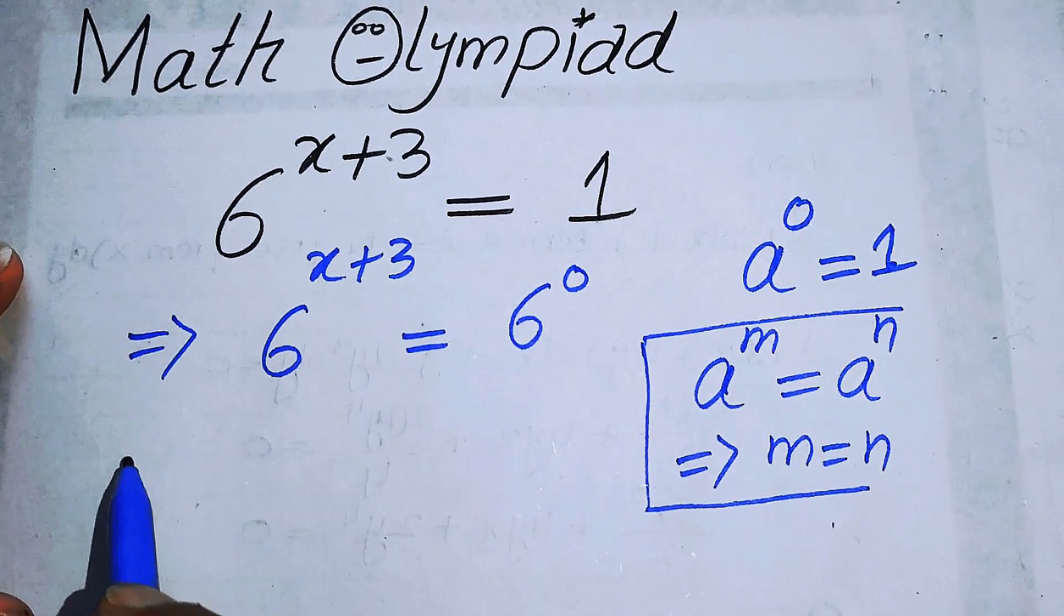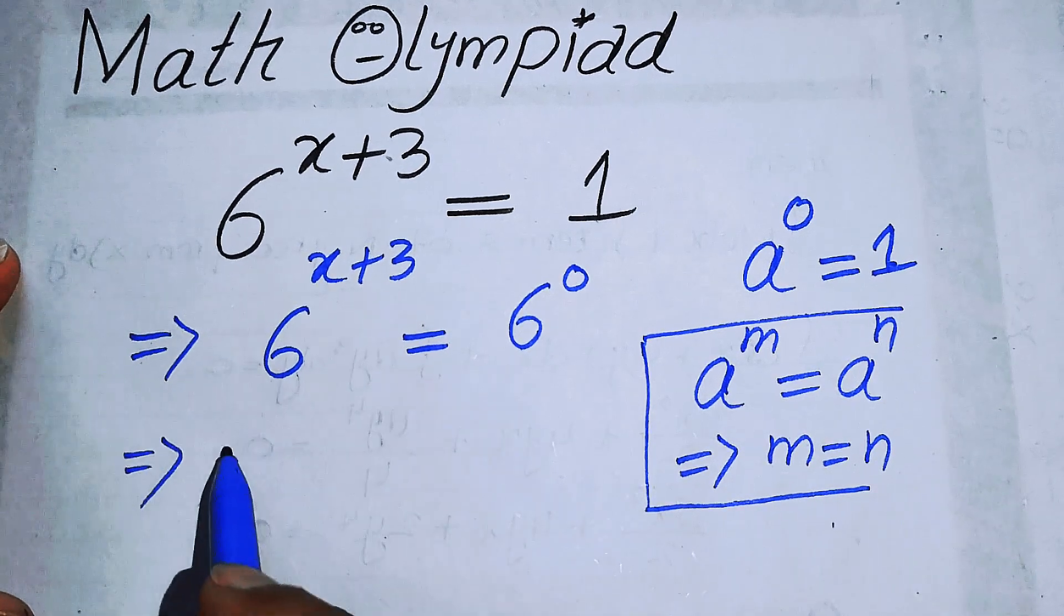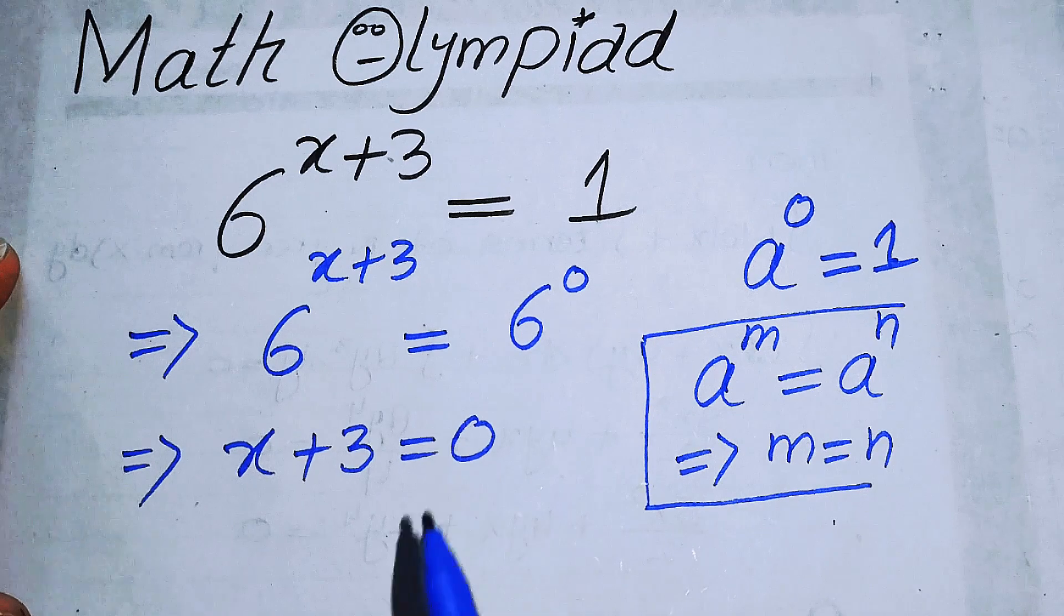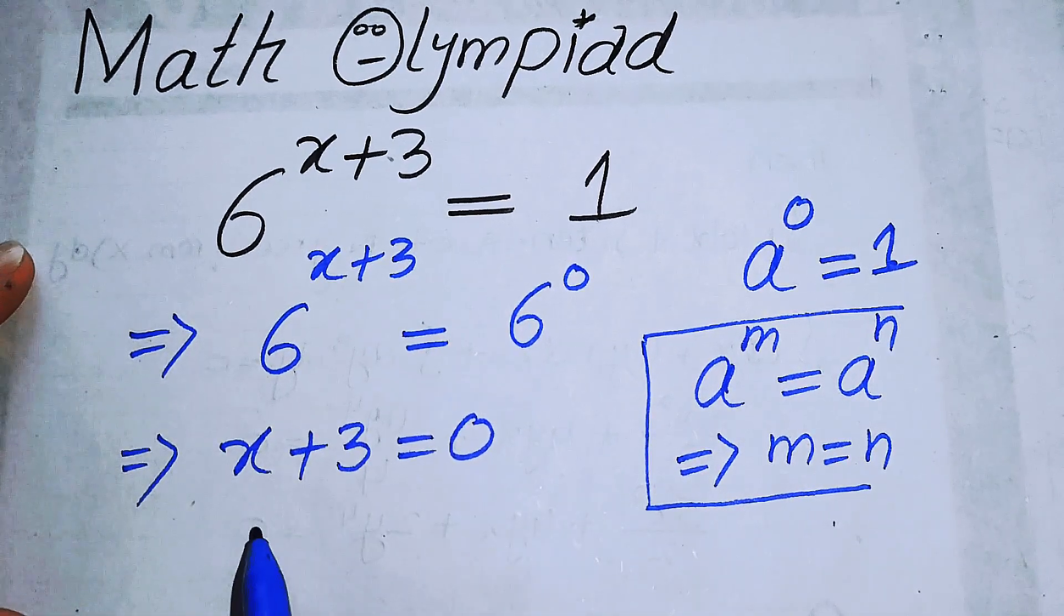Bases on both sides are the same, so their exponents are equal to each other, and we have x plus 3 equals 0. And finally we get here...